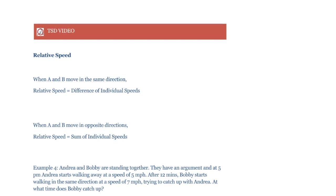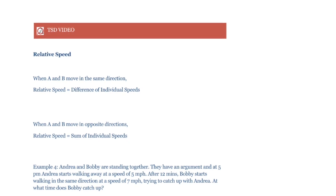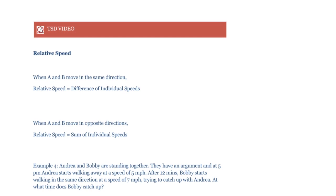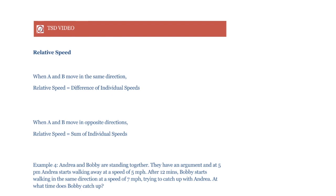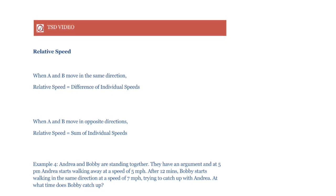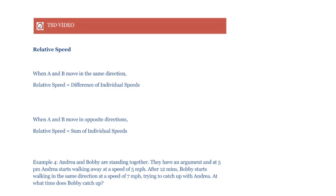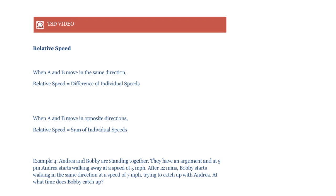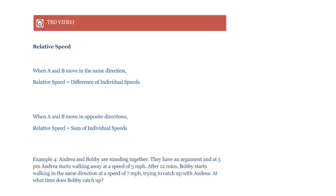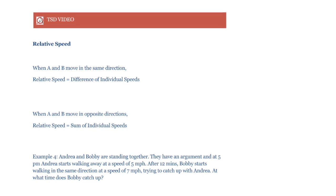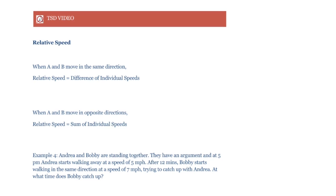Now let's discuss relative speed. All speeds are relative — the speed of an object is its speed with respect to a reference point or object. When we say a car's speed is 50 mph, we mean its speed with respect to a point on Earth. But what happens when our point of reference is also moving?